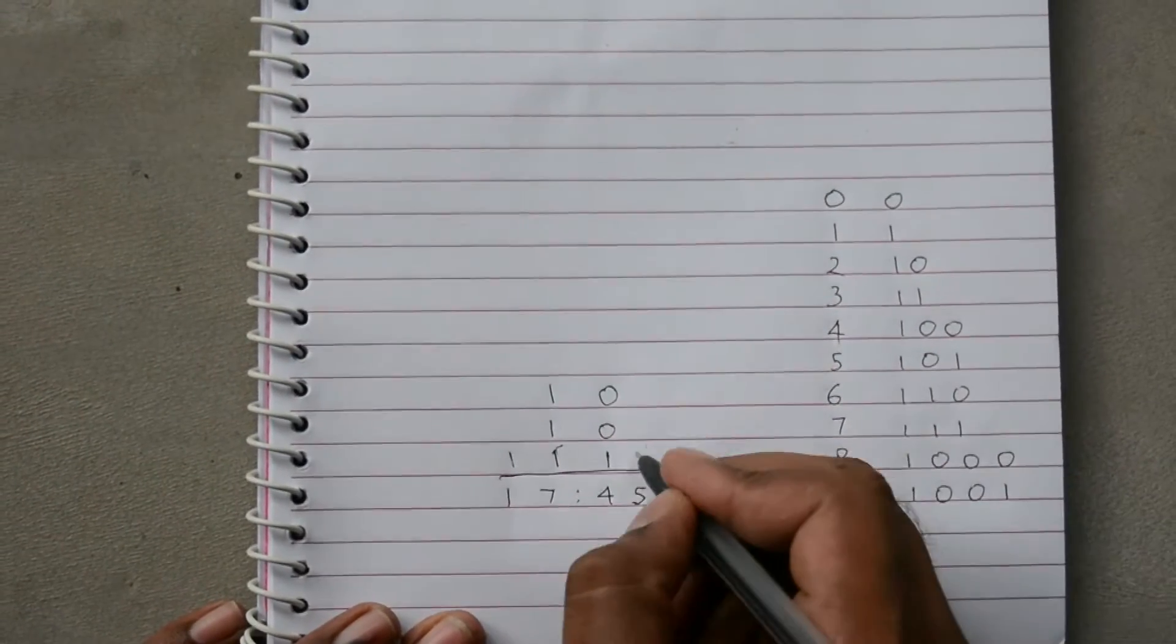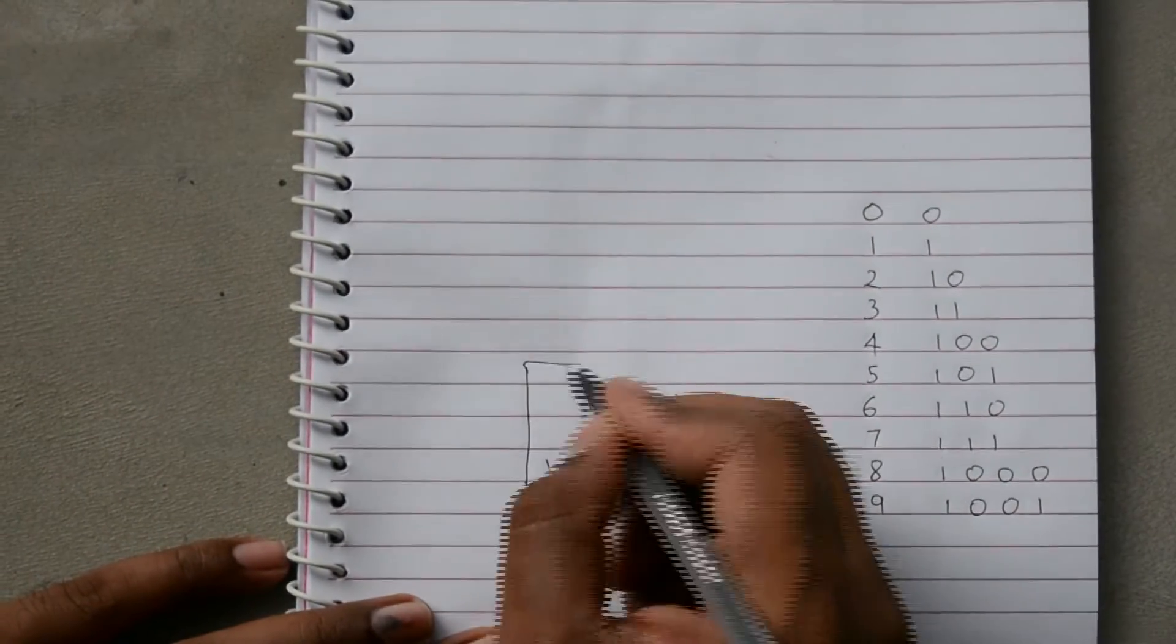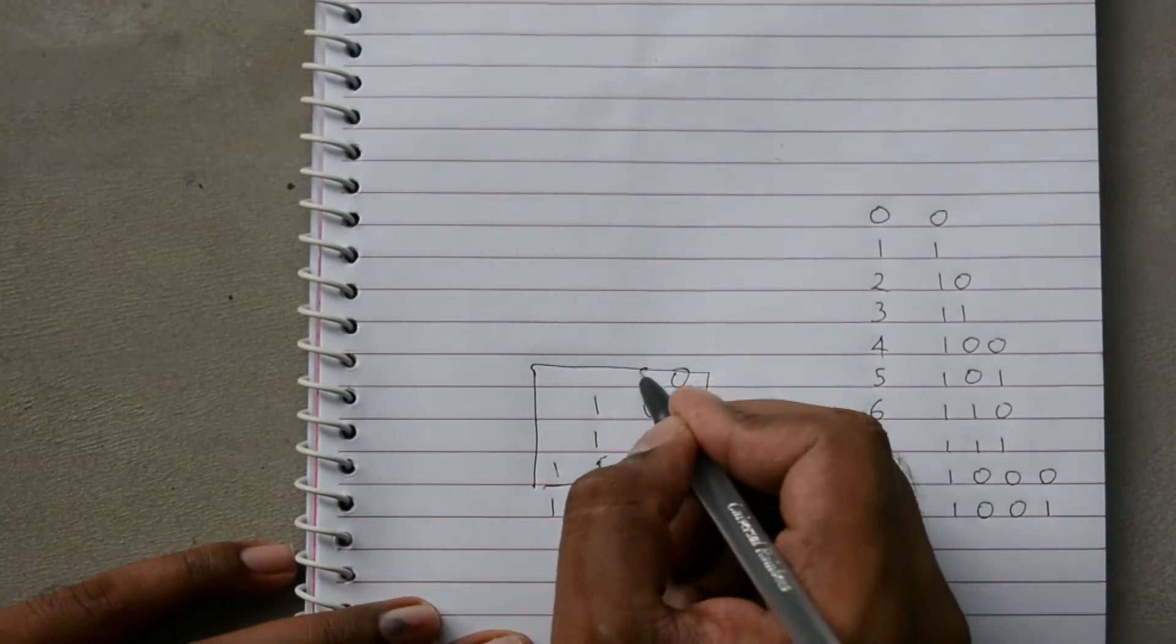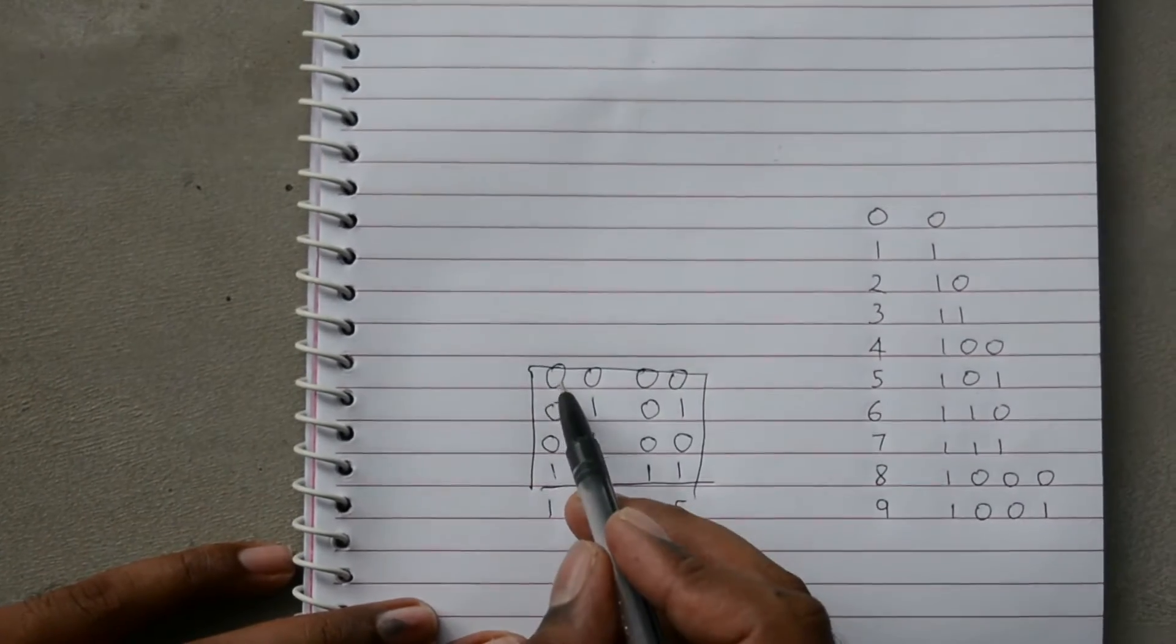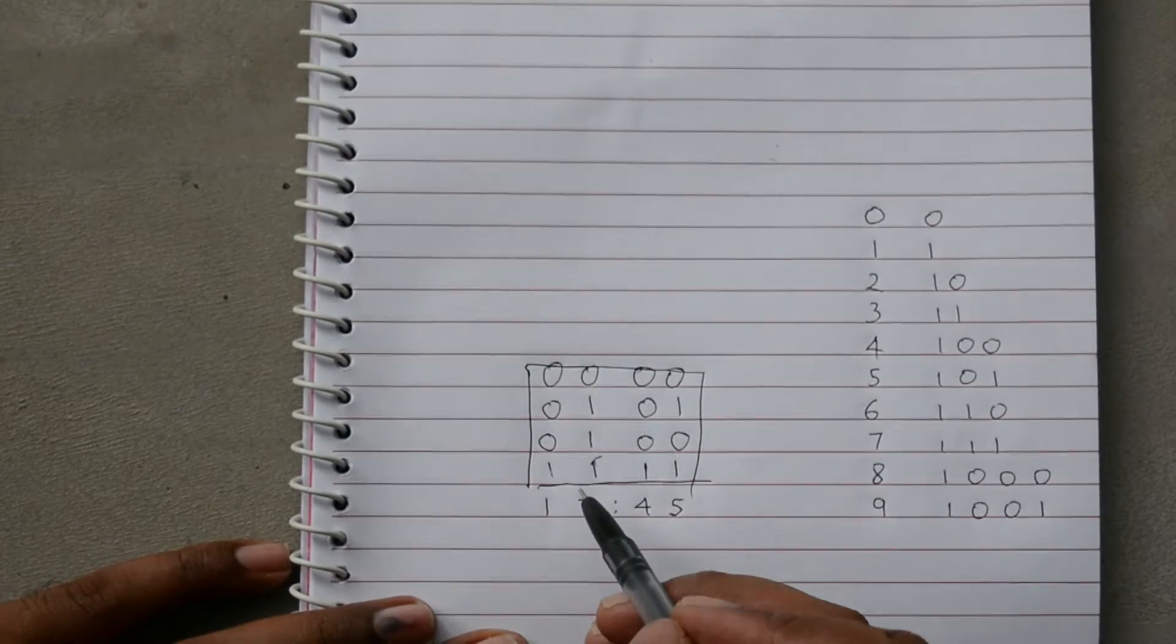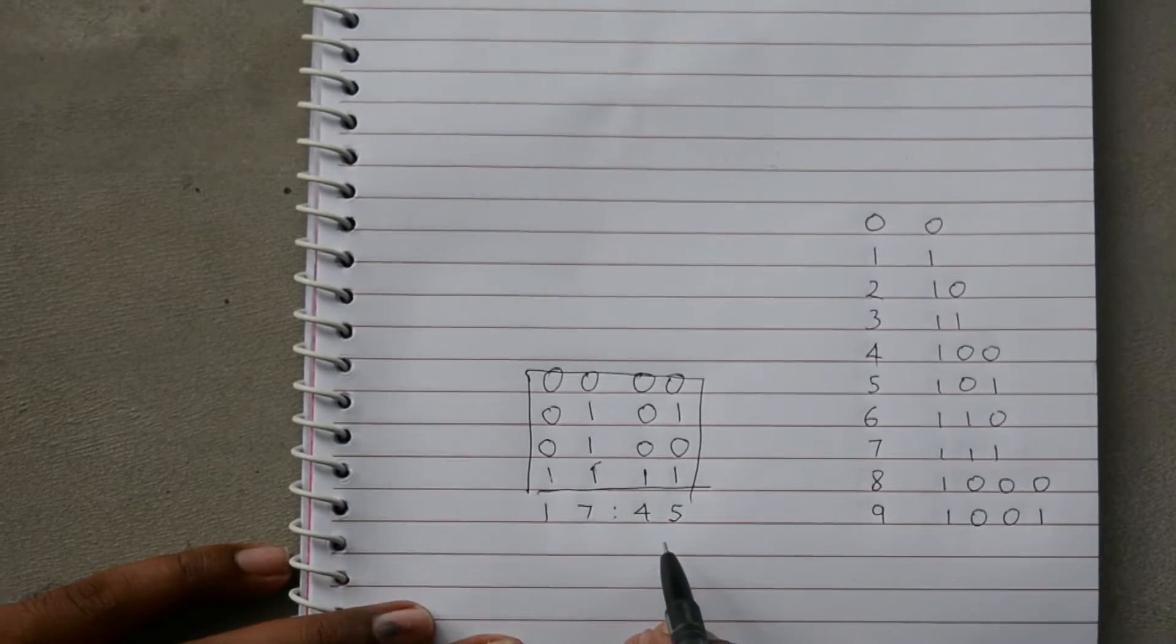and for 5 it's 101. So now if this were a matrix of LEDs, a 4 by 4 matrix of LEDs, and the zeros where LEDs being off and ones where LEDs being on, if the light glows in this pattern the time would be 1745, that is 5:45.